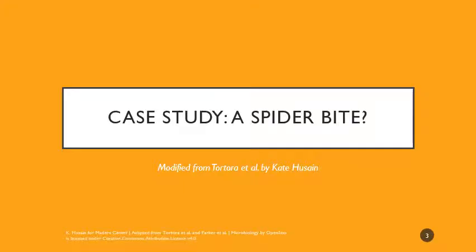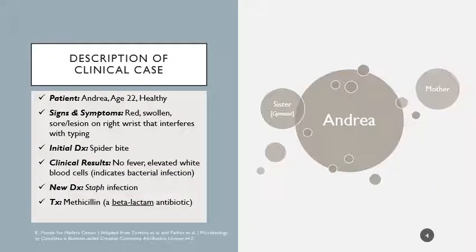The first thing we're starting with is a case study from a different textbook - the one I used when I first started teaching micro. This clinical case presents with a patient named Andrea, age 22, who is very healthy. She lives at home and comes into contact with her sister, who is a gymnast, and her mother. She ends up getting a sore or lesion on her right wrist so aggravated that it interferes with her ability to type. It's very red and swollen.